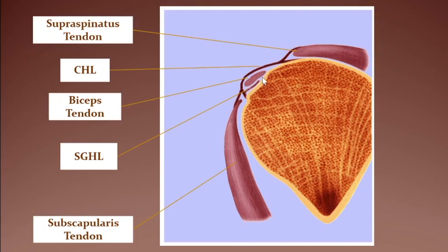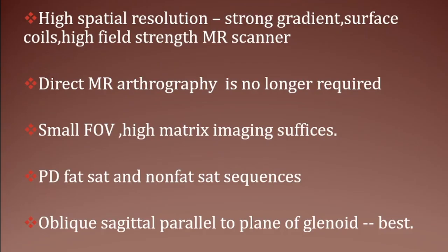This is one picture that will repeatedly come up for our understanding. This is the biceps tendon in the bicipital groove. The structure above is the coracohumeral ligament and the structure below is the superior glenohumeral ligament. The CHL is attached to the supraspinatus laterally, whereas medially it is attached to the SGHL, forming a complex which is in turn connected to the subscapularis.